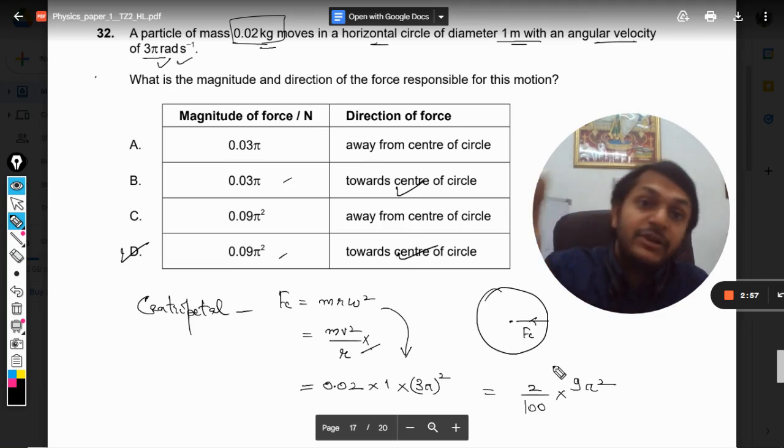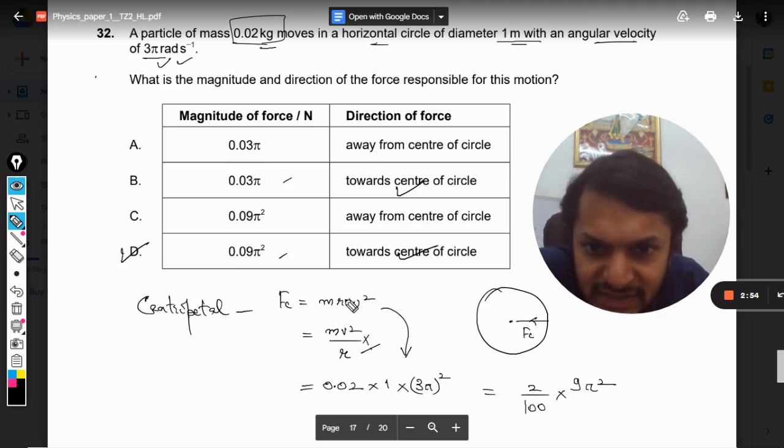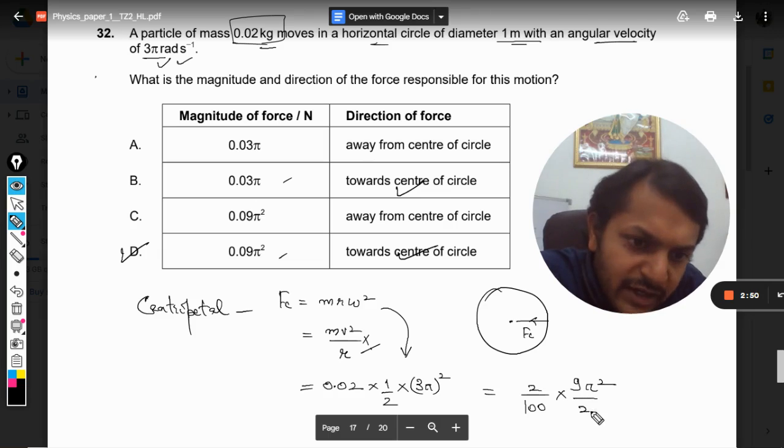Okay, the diameter is 1 meter. I'm sorry, this is radius, so radius has to be divided by 2. So when we divide it by 2, so 2 and 2 will get cancelled, so it will be 0.09 pi square.